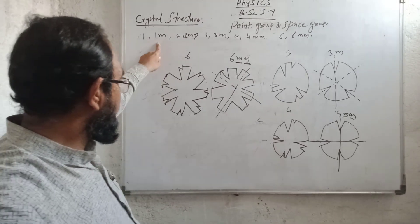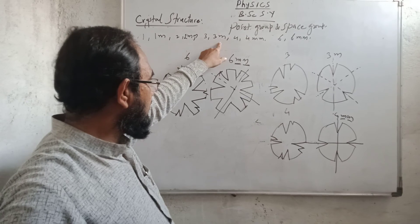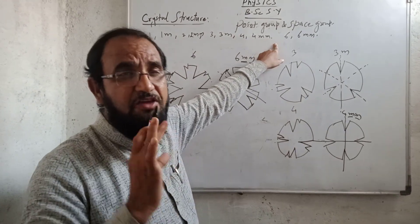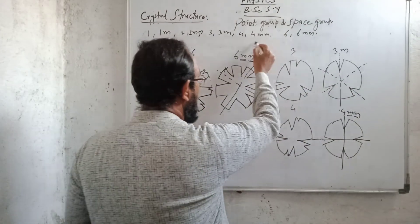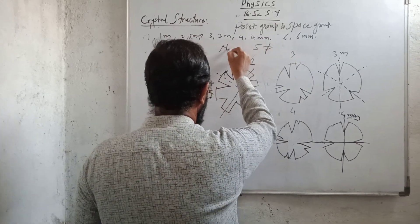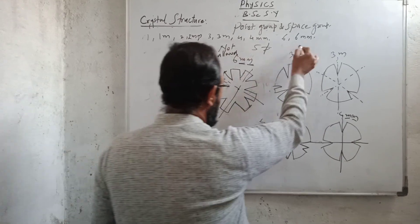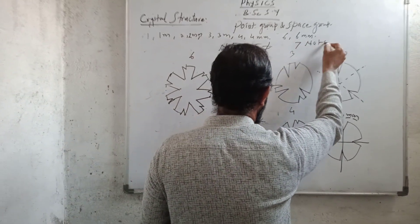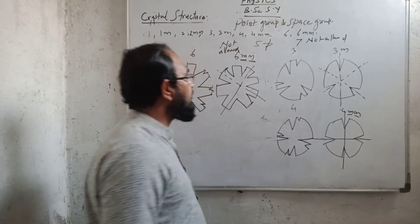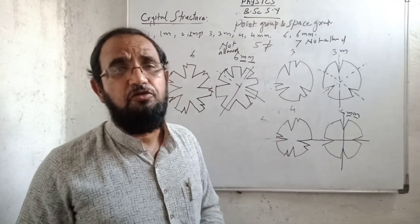So the allowed stages are 1, 1M, 2, 2MM, 3, 3M, 4, 4MM — and 5 is not allowed — then 6 and 6MM. Such types of operations are called point group operations.